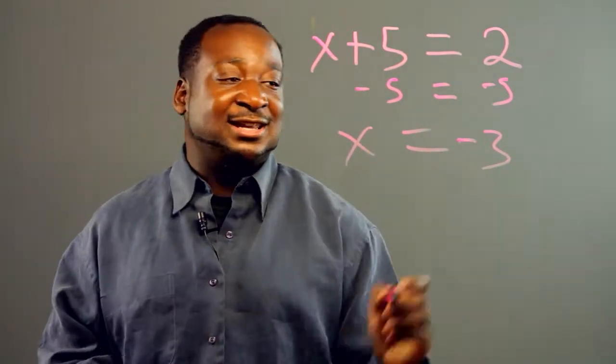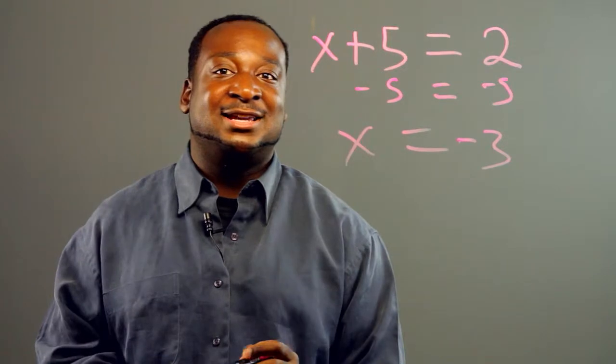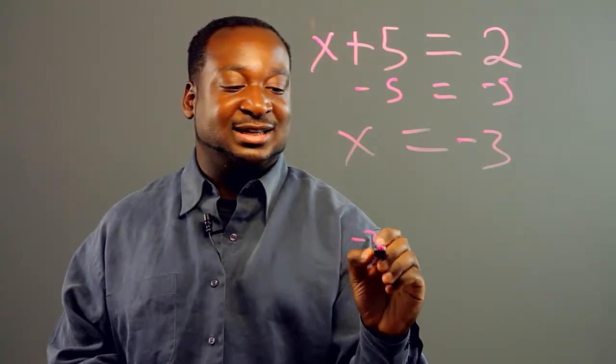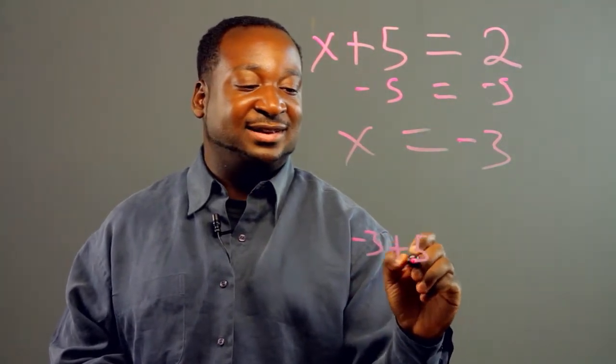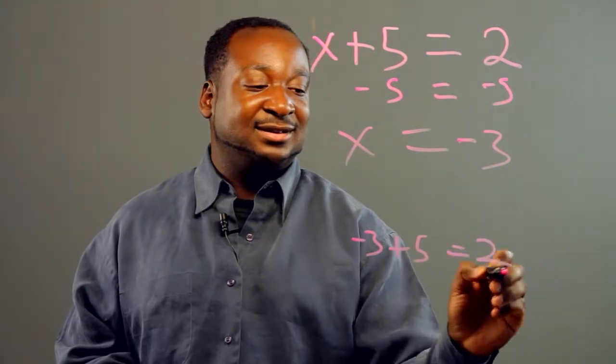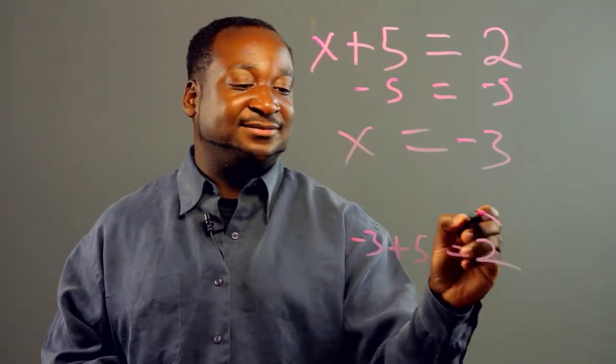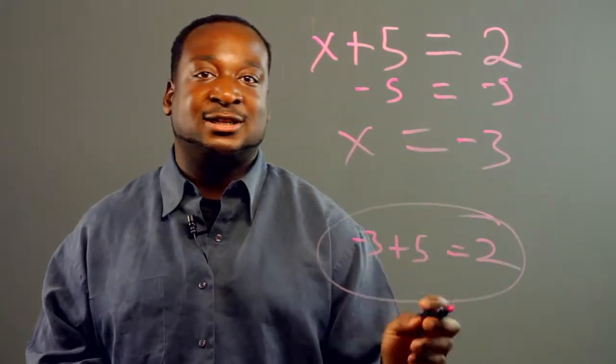And we can even check it by putting the original value in our equation. Negative 3 plus 5 equals 2. And it works out. So thus we have our answer.